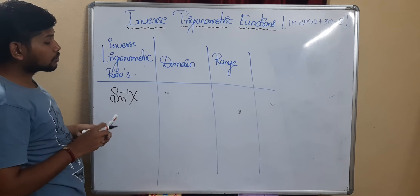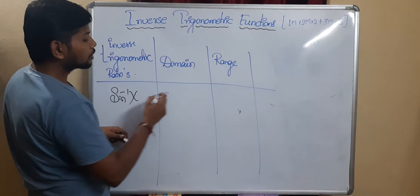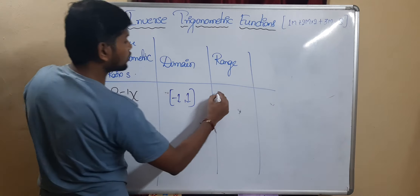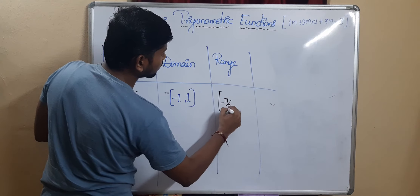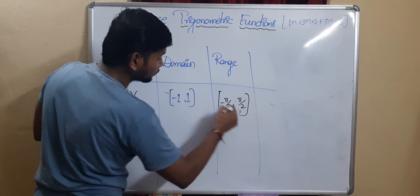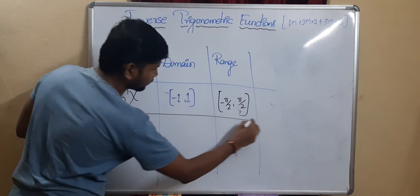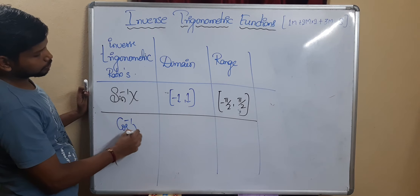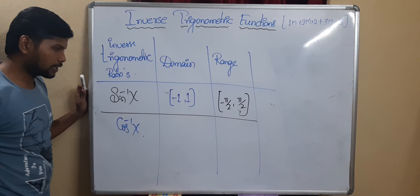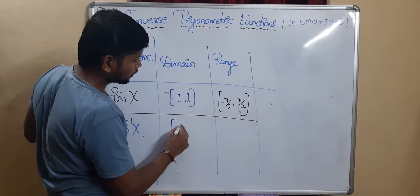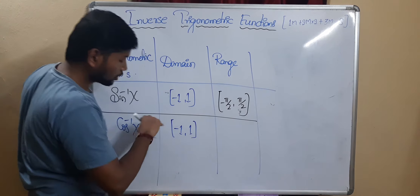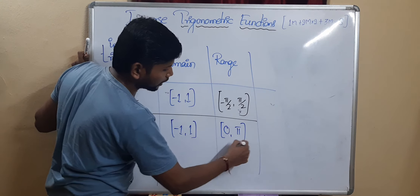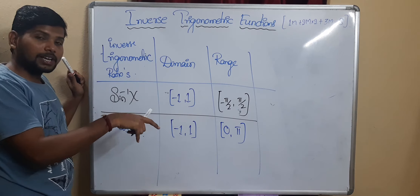For sin inverse(x): the domain is [−1, +1] and the range is [−π/2, +π/2]. The next trigonometric ratio is cos inverse(x). For cos inverse(x): the domain is also [−1, +1] and the range is [0, π].